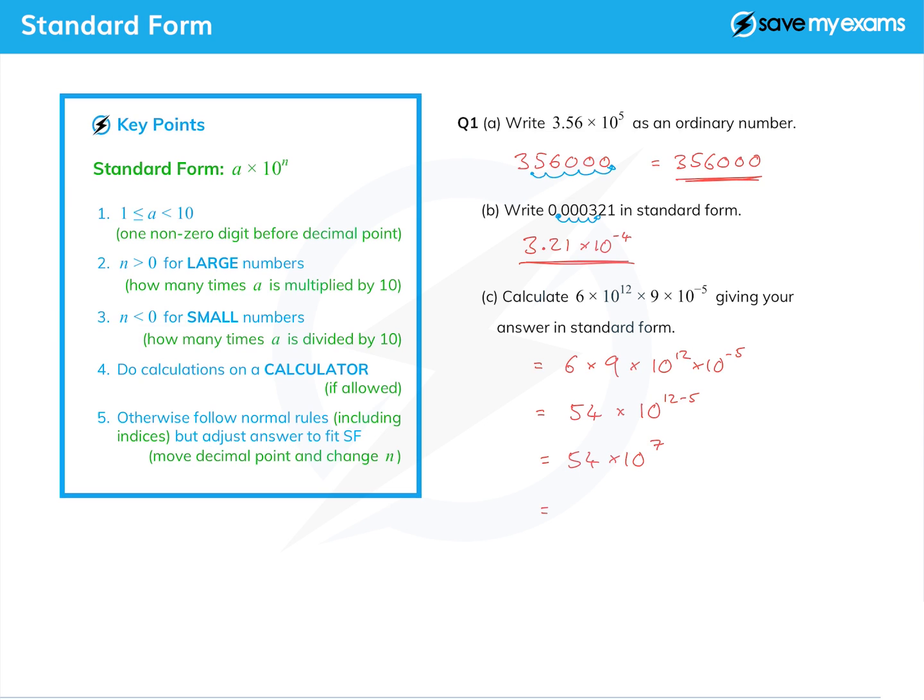So let's try that. At the moment the decimal point is after the 54, so let's put it in the middle so it's 5.4. So the 'a' fits the rules. Let's just think about this: 54 is 5.4 times what? Well, it's 5.4 times 10, isn't it? And I've still got the 10 to the 7 there.